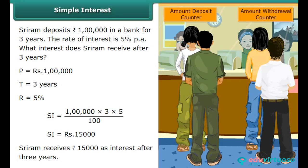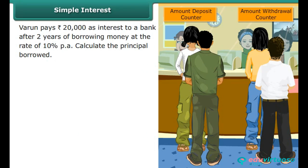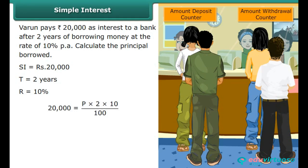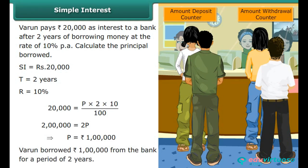Example: Varun pays Rs. 20,000 as interest to a bank after 2 years of borrowing money at the rate of 10% per annum. Calculate the principal. SI = (P × T × R) / 100 → 20,000 = P × 2 × 10 / 100. Solving, Principal = Rs. 1,00,000. Varun borrowed Rs. 1,00,000 for a period of 2 years.